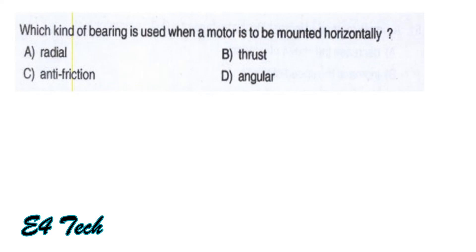Which kind of bearing is used when a motor is to be mounted horizontally? The options are: radial, thrust, anti-friction, and angular. For a horizontally placed motor, the best type of bearing is a radial bearing. That is option A.